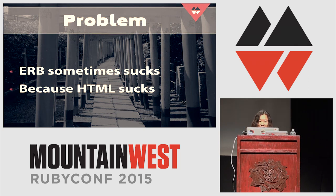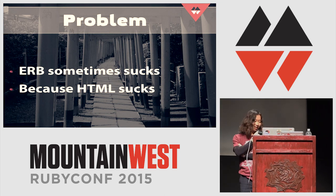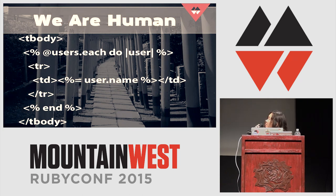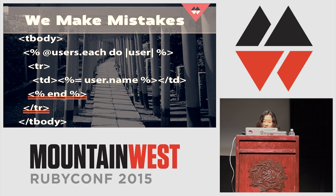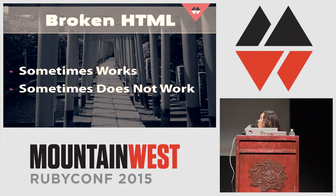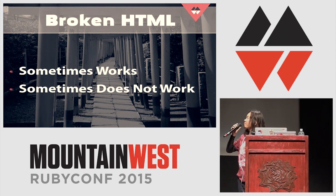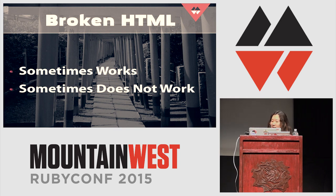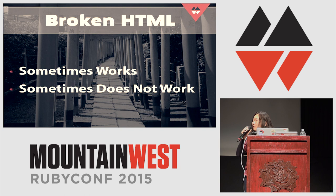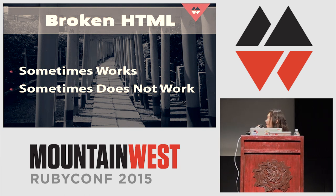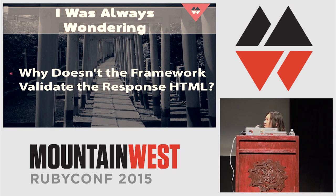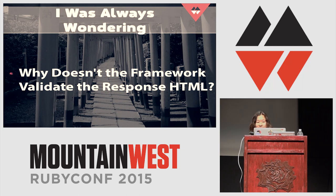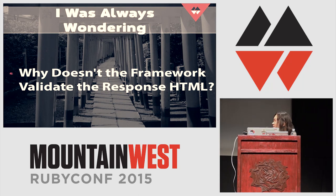eRuby sometimes sucks. For example, if you want to render something, you sometimes make mistakes. Then what's going to happen? The HTML breaks — it's going to be broken — but it kind of works on the browser, because browsers are so clever and render it somehow. So sometimes it does work, but sometimes it does not, which is so annoying. I was always wondering: why doesn't the framework — like ActionView or ERB — why doesn't someone validate the response?